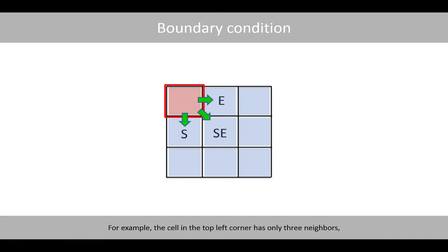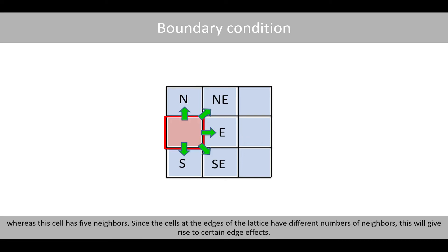For example, the cell in the top left corner has only three neighbors, whereas this cell has five neighbors. Since the cells at the edges of the lattice have different numbers of neighbors, this will give rise to certain edge effects.